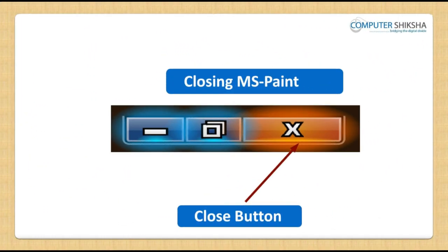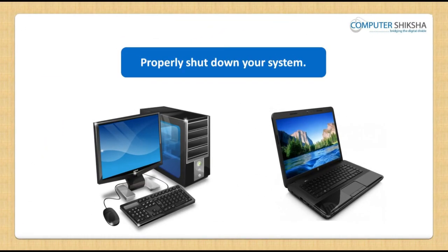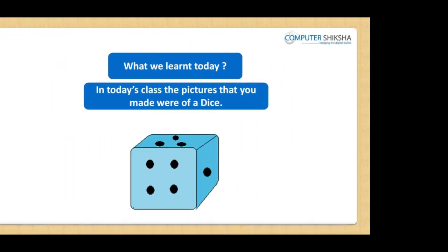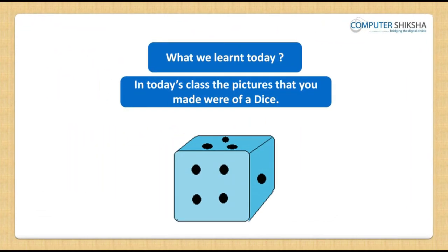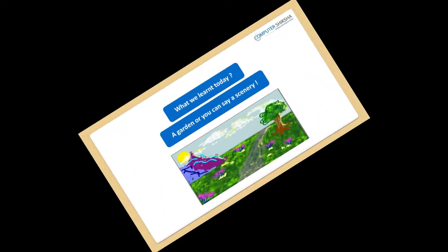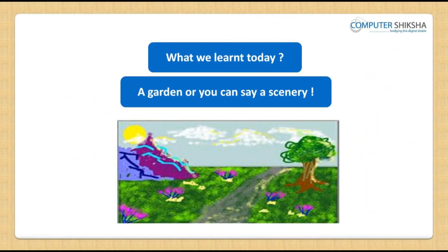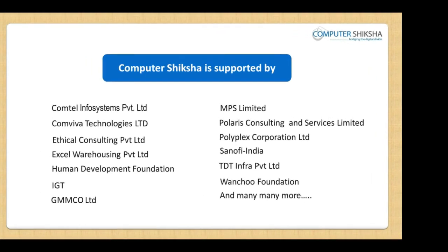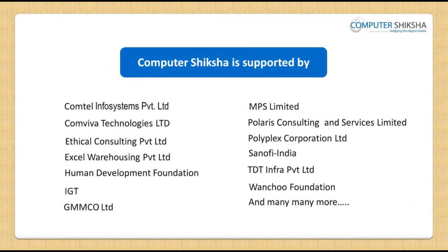This class will end here, so close your file and properly shut down your computers. In today's class, the pictures that you made were of a dice, a bat, a face, and a garden or scenery.